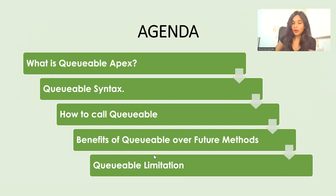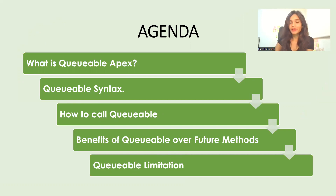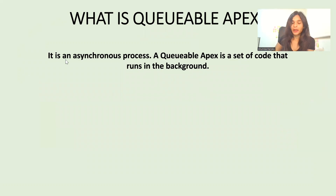So what is Queueable Apex? Just like Future Methods, it is also a set of code that runs in the background. It is an asynchronous process.